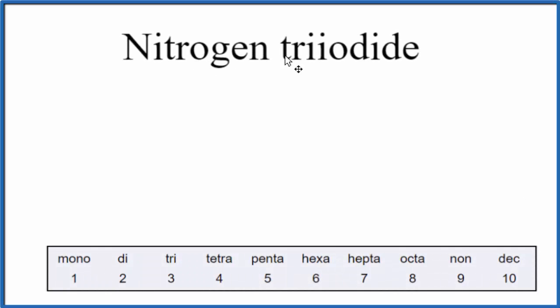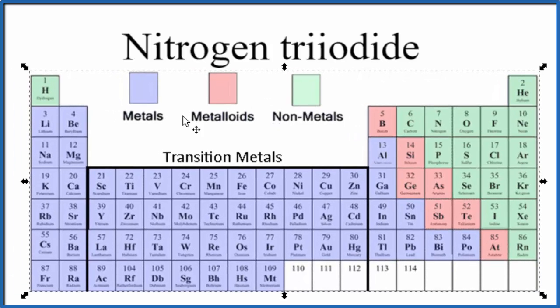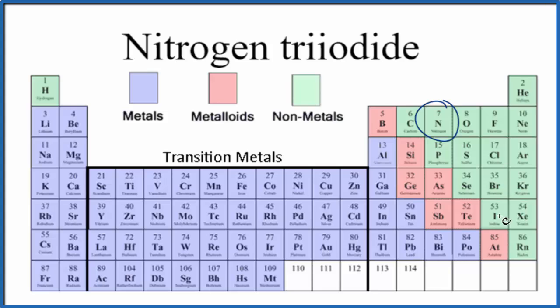To write the formula for nitrogen triiodide, we need to figure out what type of compound we have here. We can look at the periodic table. We're looking for nitrogen and iodine. Here's nitrogen and here's iodine.